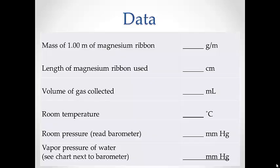This is the data you need for this lab. The mass of one meter of magnesium ribbon will be given to you in the lab. You will measure the length of magnesium ribbon that was used and the volume of the gas collected. There will be a LabQuest on the front desk that will be measuring the room temperature and the pressure throughout the lab. Be sure to record these when you measure the volume.